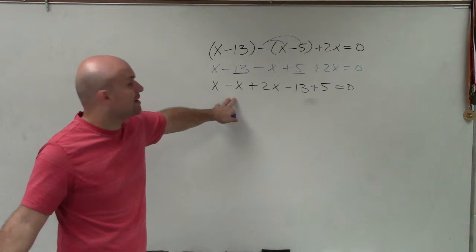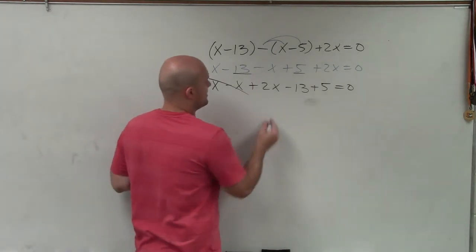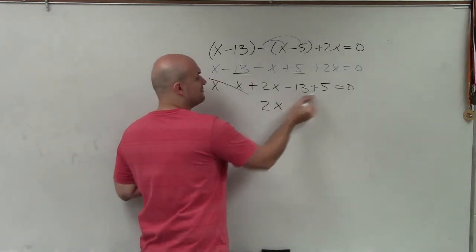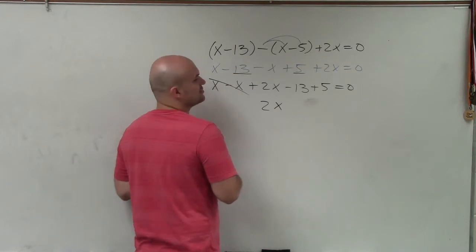All right. Well, x-x is 0x, so therefore I'm just left with 2x. And -13+5 is going to leave me with -8. So 2x-8=0.